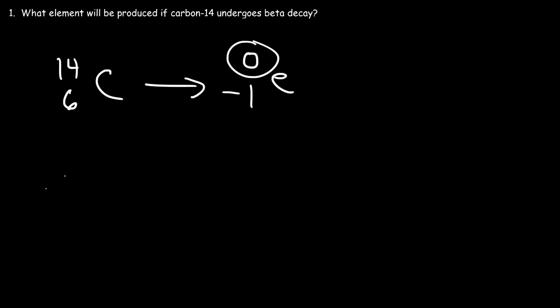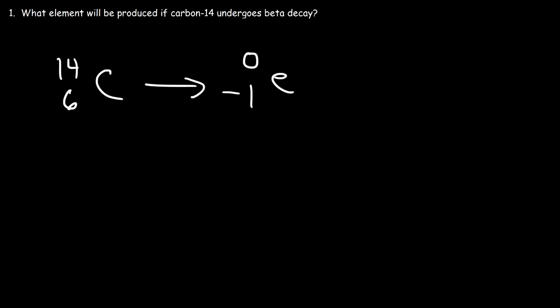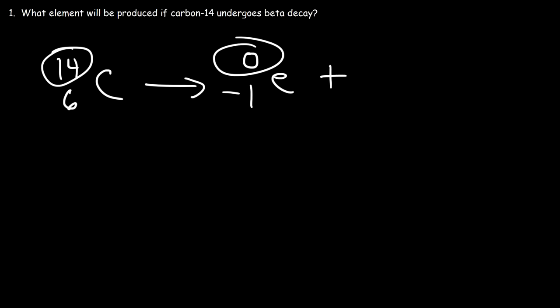An electron has a mass of virtually zero relative to protons and neutrons — they're very small — and the charge of an electron is negative one. Carbon has six protons, so the charge of the nucleus is positive six. To identify the missing element, we need to make sure the total mass and total charge in this equation is balanced, following the law of conservation of mass and charge. On the left side, the total mass is 14, so on the right side the total mass has to be 14 as well. Since the beta particle mass is zero, 14 minus zero is 14.